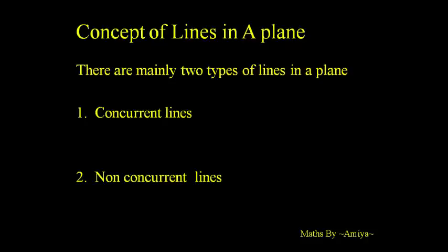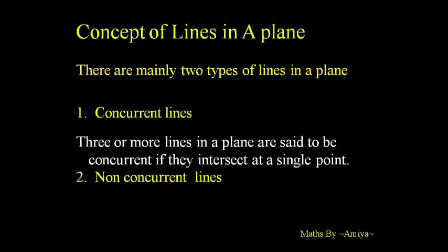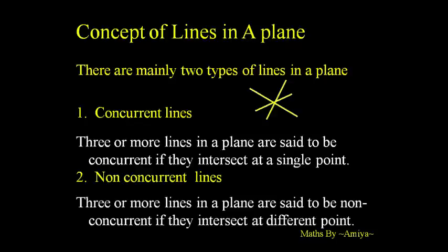Check the definitions. Three or more lines in a plane are said to be concurrent if they intersect at a single point. Three or more lines in a plane are said to be non-concurrent if they intersect at different points.